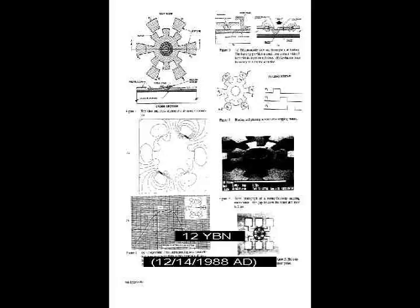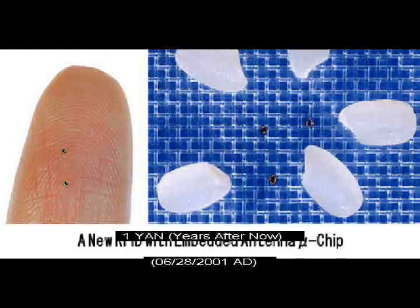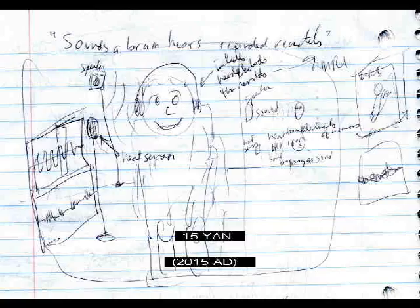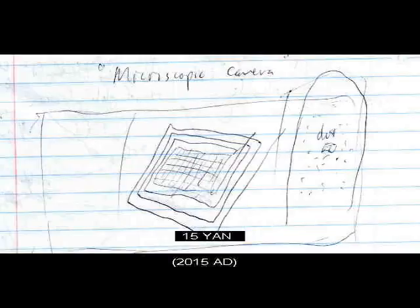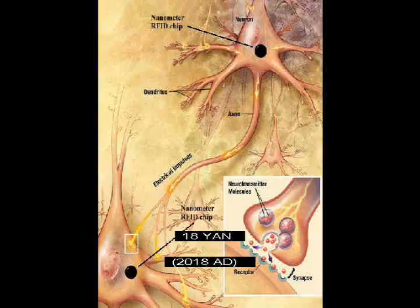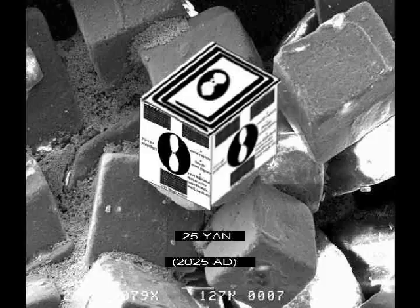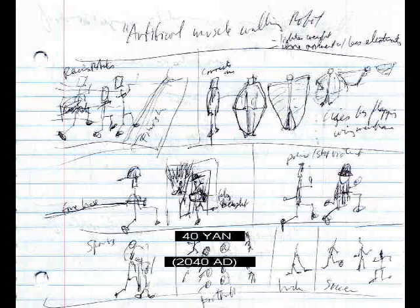Ship reaches Saturn. Ship reaches Uranus. Microscopic motor. Ship reaches Neptune. Individual atoms moved. Microscopic radio chip. Remote neuron reading. Image of what the eyes are seeing captured remotely. Sound a brain hears recorded remotely. Microscopic camera. Radio device functions as cell organelle. Remote neuron writing using microscopic devices in neurons. Thought images seen. Thought audio recorded and played out loud.